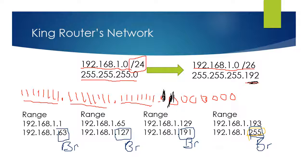Now what we need is the network address for each network. Network 1's network address is .0. Network 2's network address is .64. The third network's address is .128. And the fourth network's address is .192.